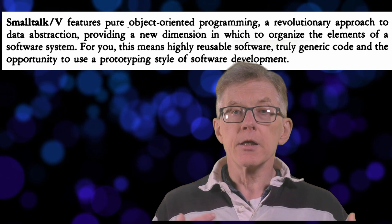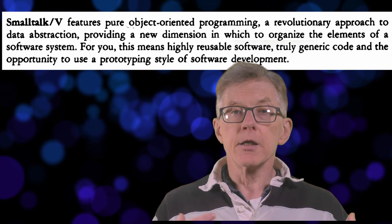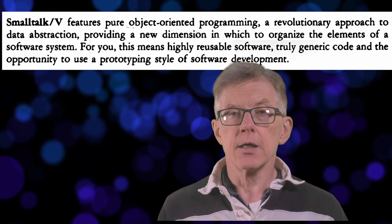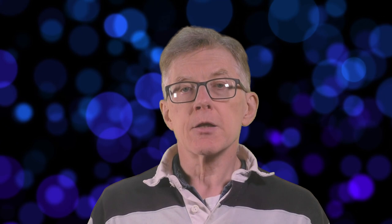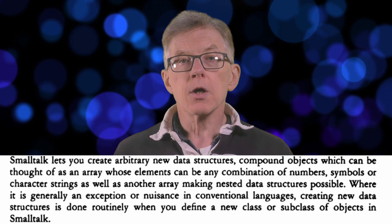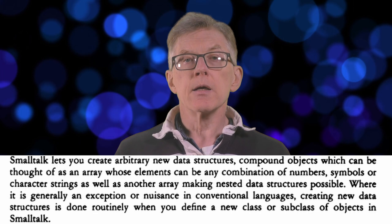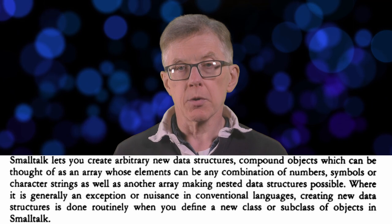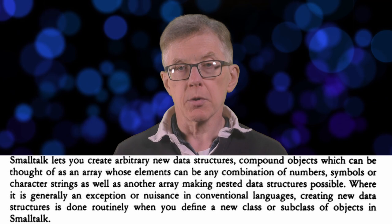I think the introduction on page 1 of the tutorial gives a better explanation. It says pure object-oriented programming takes a revolutionary approach to data abstraction, providing a new dimension in which to organize the elements of a software system — highly reusable software, truly generic code, and the opportunity to use a prototyping style of software development. Basically, this means that Smalltalk lets you create your own data types, that is, your own classes. The Smalltalk V tutorial says Smalltalk lets you create arbitrary new data structures, and where it is generally an exception or nuisance in conventional languages, creating new data structures is done routinely when you define a new class or subclass of objects in Smalltalk.